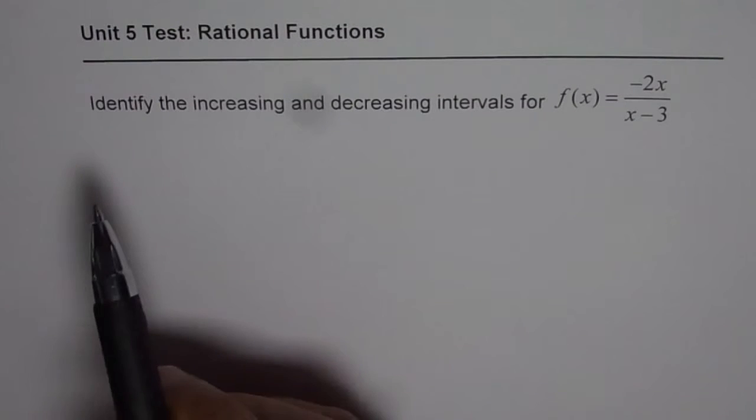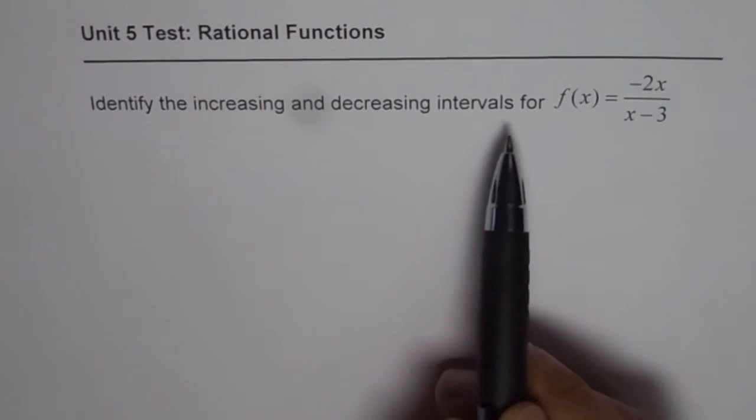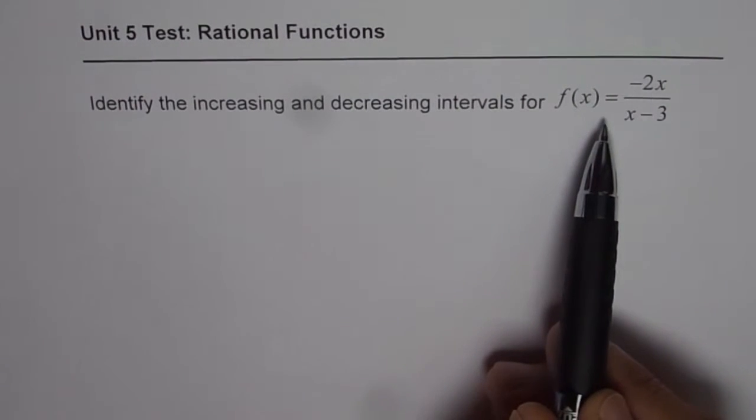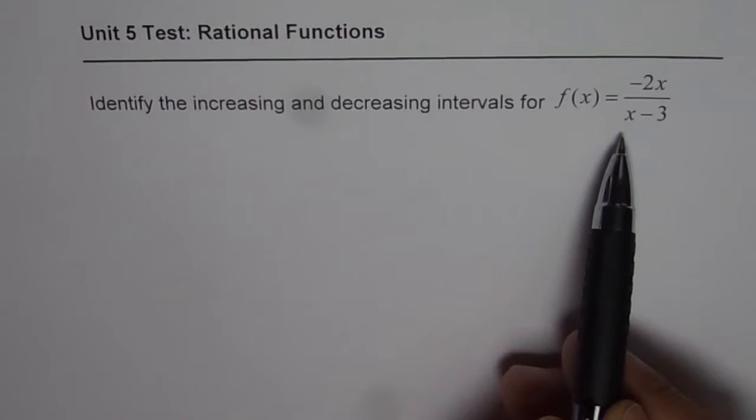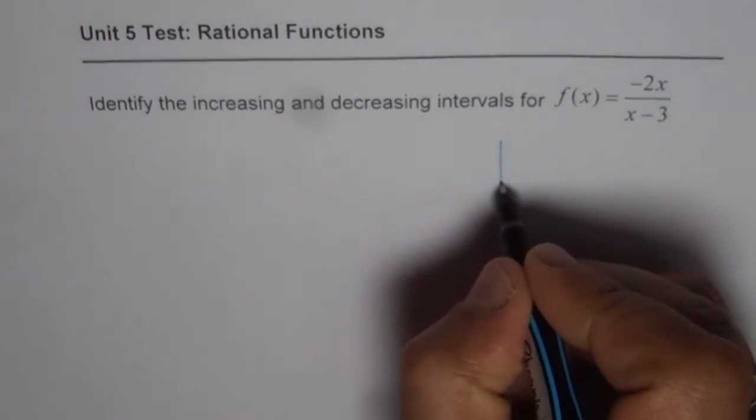Here is the very first question. It says identify the increasing and decreasing interval for f(x) = (2 - 2x)/(x - 3). Now when you want to identify increasing and decreasing interval, it is a good idea to sketch the function so that you see and then write down your answer.